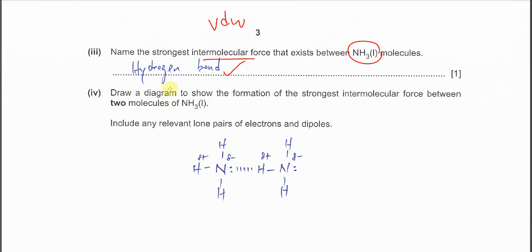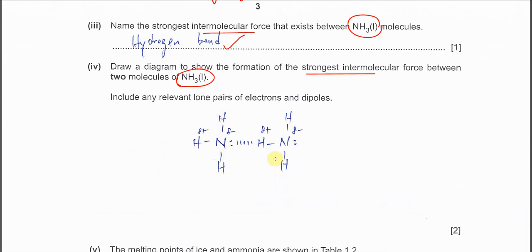Part four: draw a diagram showing the formation of the strongest intermolecular force between two ammonia molecules. Draw two molecules and make sure the lone pair on nitrogen is shown. Draw dotted lines between the hydrogen bonded to nitrogen and the lone pair on the other nitrogen. You must also show at least three dipoles: partial negative on nitrogen, partial positive on hydrogen, and partial negative on the second nitrogen.